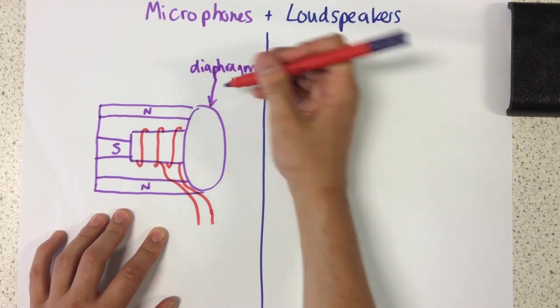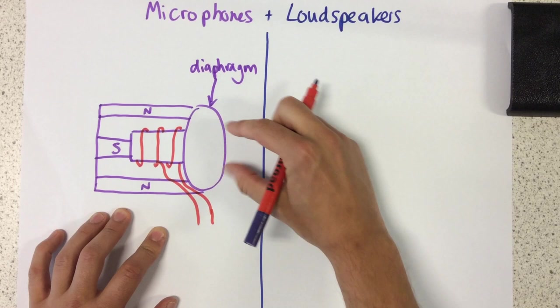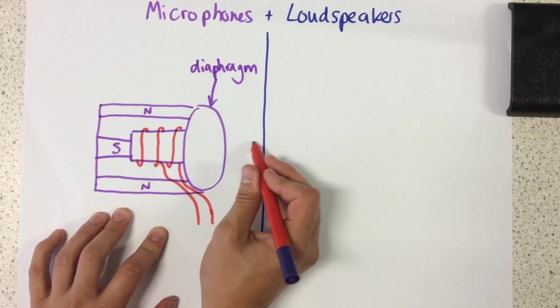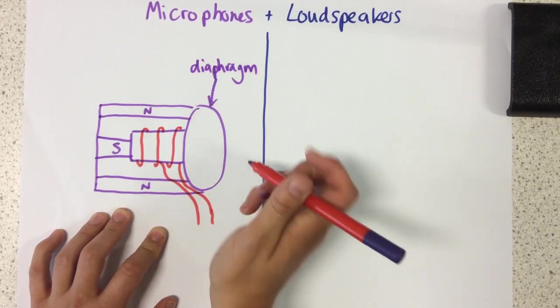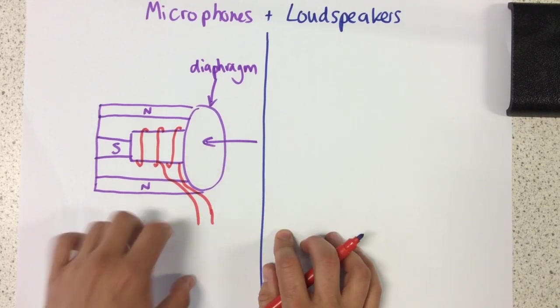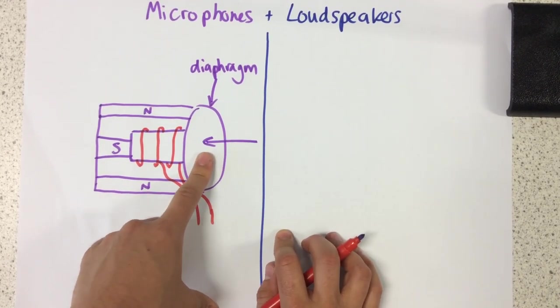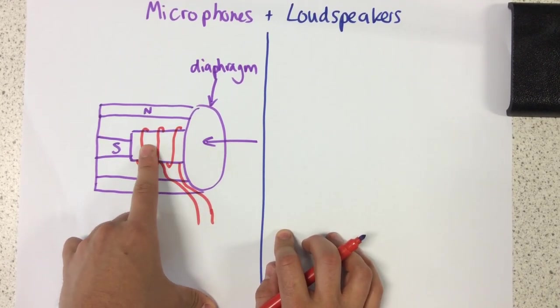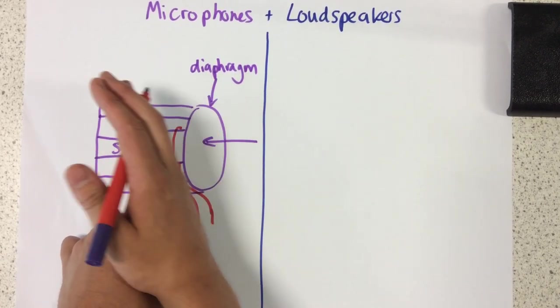Now, what happens here is when someone talks or someone sings, for example, they create sound waves which hit the diaphragm. As it does this, this whole section moves.